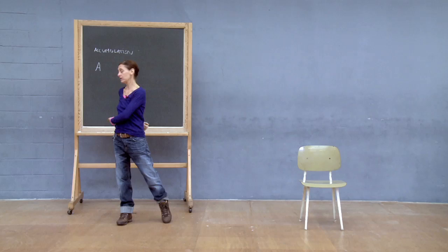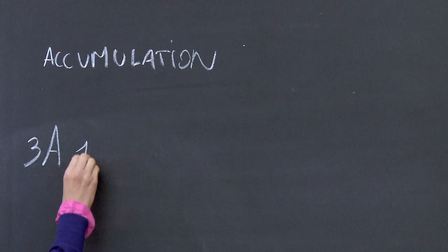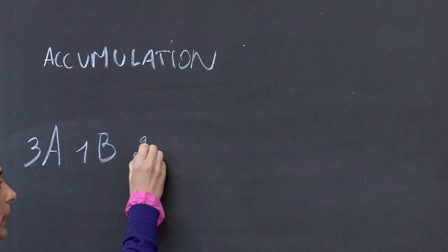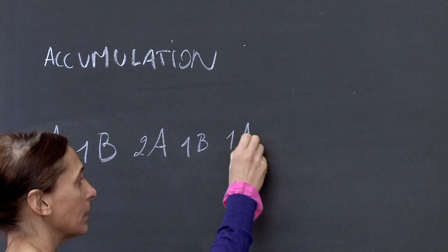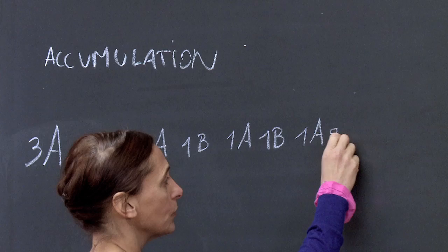What happens then is quite simple. I do 3A, 1U, 1B, 2A, 1B, 1A, 1B, 1A, 2B, 1A, 3B.